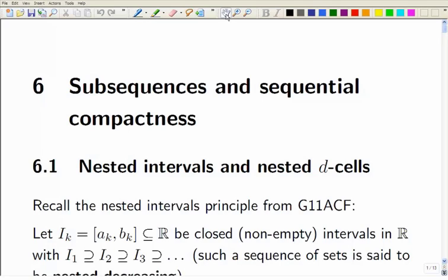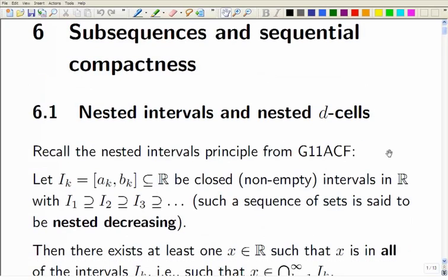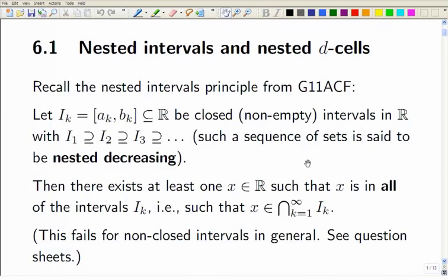What is this business of subsequences? Well, let's start by reminding you about nested intervals and nested d-cells. So here's a result from last year. If you take some closed intervals, non-empty, so I'm going to assume that a_k is less than b_k here. Non-empty, closed intervals. From now on, if I do write this sort of thing, I will be assuming that a_k is less than b_k, because otherwise it's a bit of a silly notation.